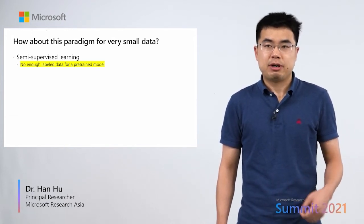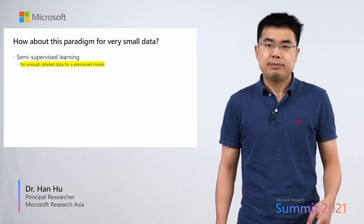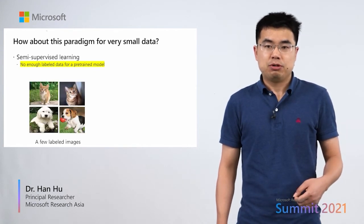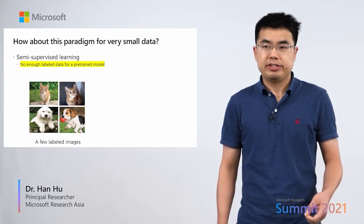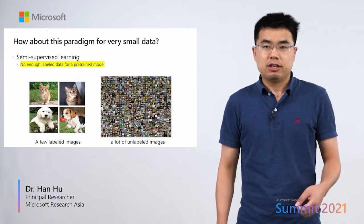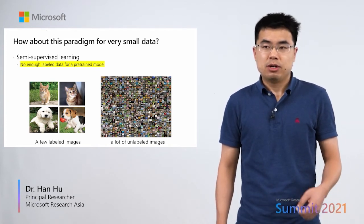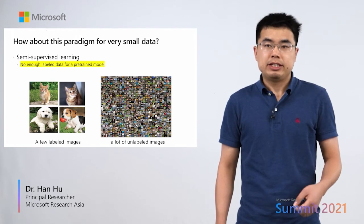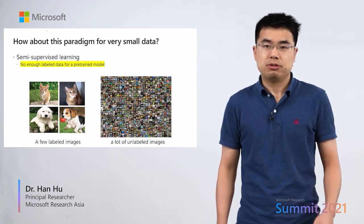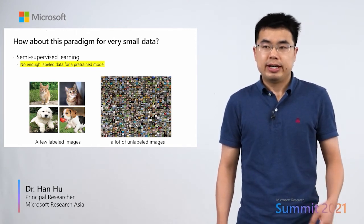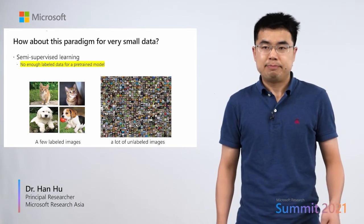There are two related topics about small data regimes. The first one is semi-supervised learning. In this topic, there are a few labeled images — for example, two cat images and two dog images — and also a large amount of unlabeled images. The goal is to well-recognize cats and dogs. For a long time, the pre-training and fine-tuning paradigm was not fully utilized, probably due to difficulty in getting a meaningful pre-trained model. Later, we will show that the pre-training and fine-tuning paradigm is also powerful for this problem, significantly better than other methods.